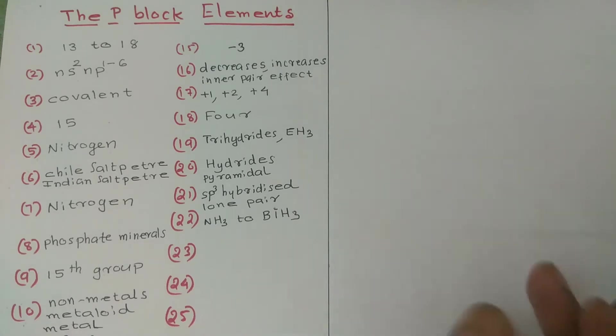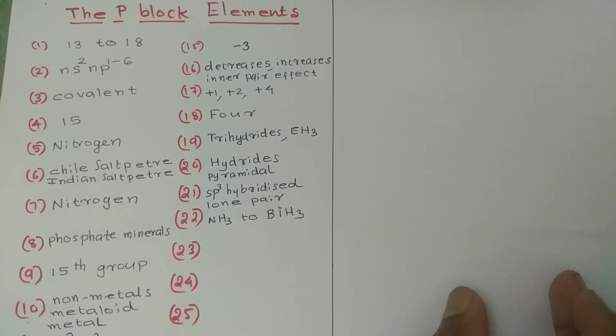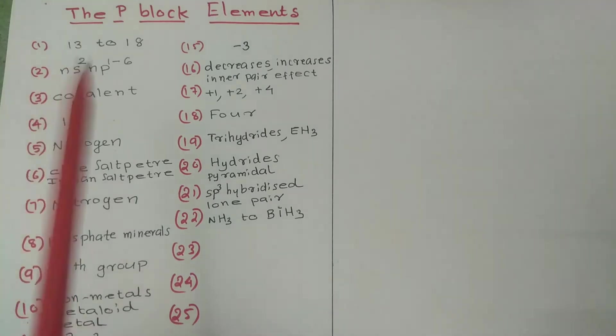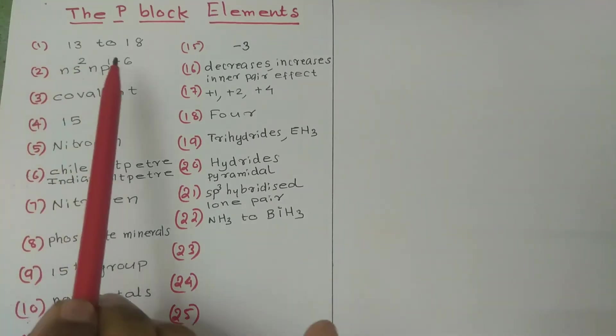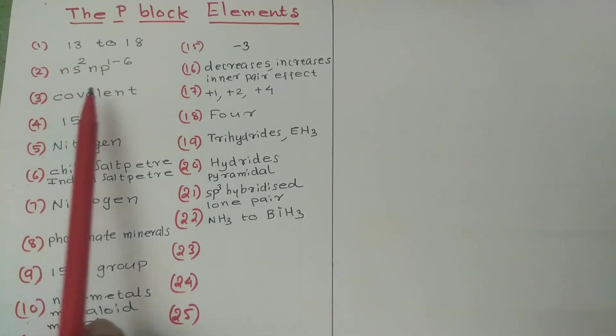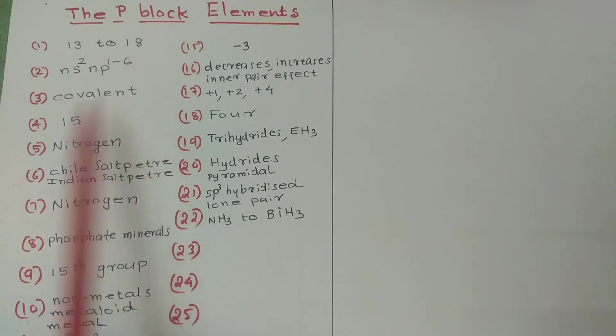P-block elements are the first part of the solution. The answer is groups 13 to 18. The electron configuration is Ns²Np¹⁻⁶.